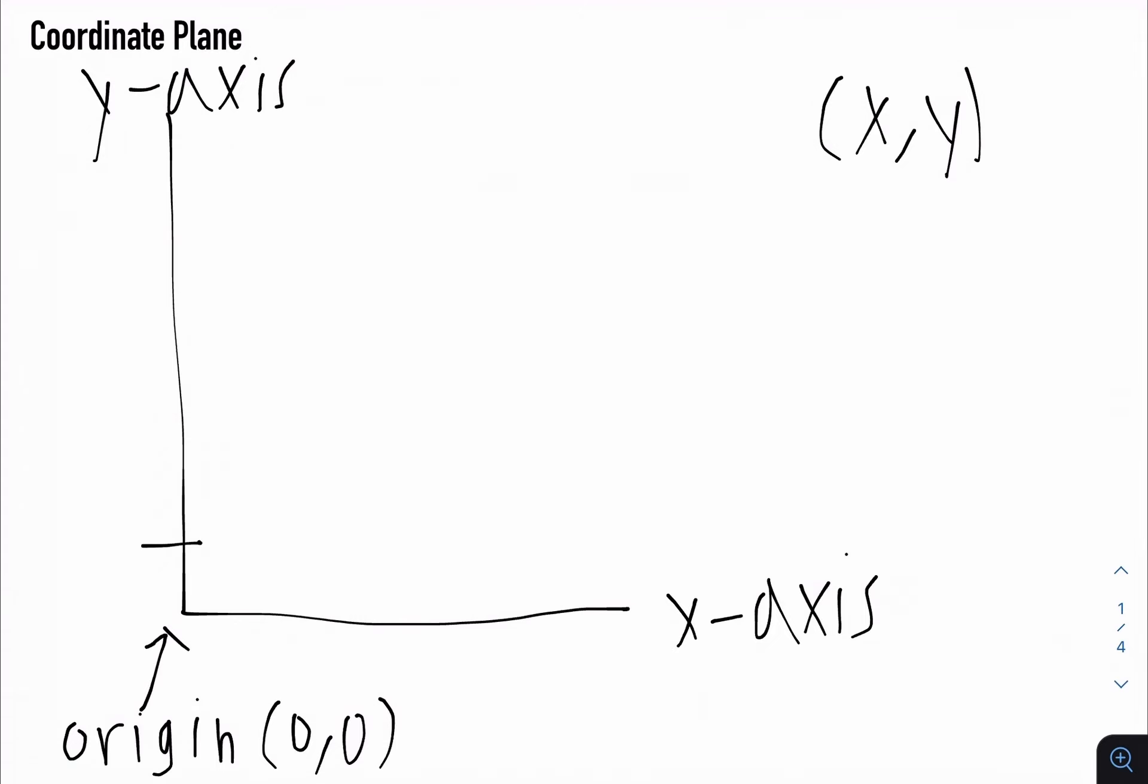So usually on these axes, there are these tick marks, and these just represent where on the graph a point is. So usually they can increase by 1, 2, 3, 4, 5, by 1s. But they can increase by other numbers as well.